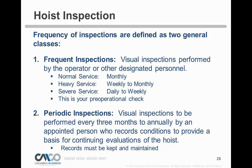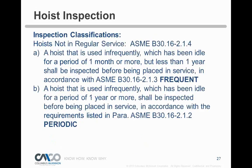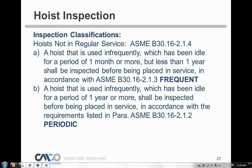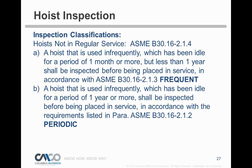The periodic inspection is a more in-depth, expanded frequent inspection with records kept on file. It must be done at least annually, possibly more depending on severity of service. For hoists not in regular service: if idle for one month to less than one year, a frequent inspection is required before placing back in service. If idle for one year or more, a full periodic inspection with a written report is required.